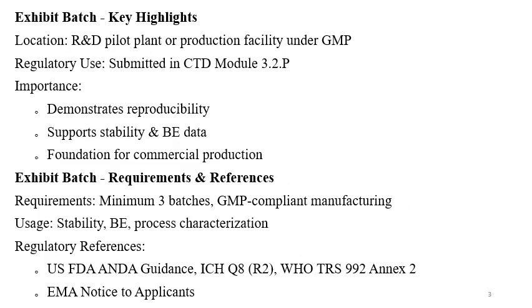Exhibit batches are taken in the GMP area. The location is an R&D pilot plant or production facility under GMP. Some organizations have a specific area to make exhibit batches, while some companies produce batches in the production facility under GMP compliance. Regulatory use is that they are submitted in CTD Module 3.2P. The importance is to demonstrate the reproducibility of the process and to support the stability data and bioequivalence data.